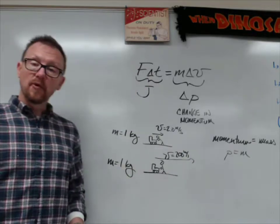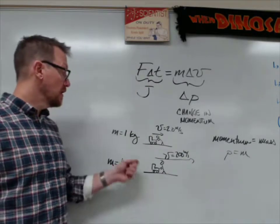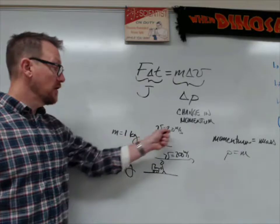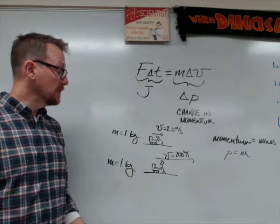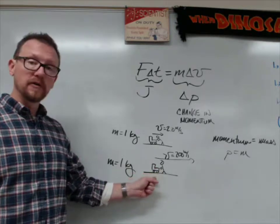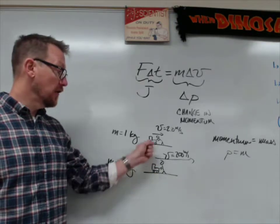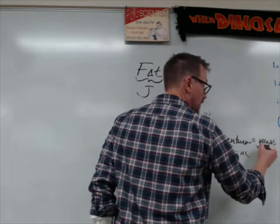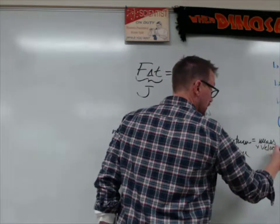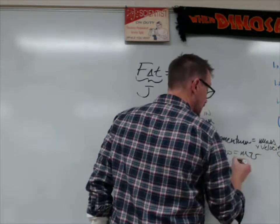So which one is going to be more difficult to stop? The toy train with a velocity of two meters per second or the toy train with a velocity of 200 meters per second? I think you can see that it would be much more difficult to stop this train than that train. And so as a result, we know that we must have velocity as a part of this equation as well. And so P equals MV.